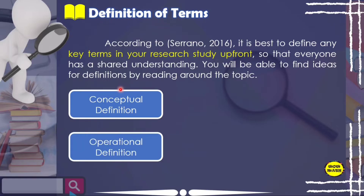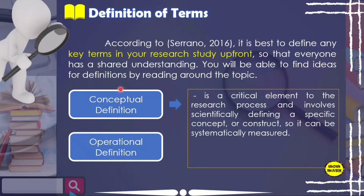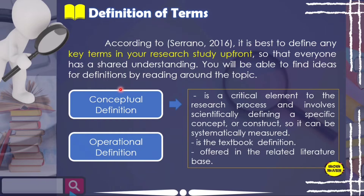When we say conceptual definition, it is a critical element to the research process and involves scientifically defining a specific concept, variable, or construct so it can be systematically measured. The conceptual definition is considered to be the textbook definition — the definition may come from a libro or dictionary. The construct must also be operationally defined to model the conceptual definition. Conceptual definitions are offered in the related literature base, and generally speaking, a conceptual definition should be presented word for word and placed in quotes with the associated reference and page number.